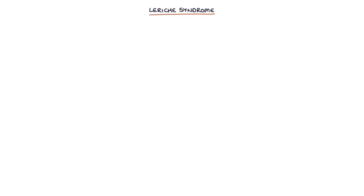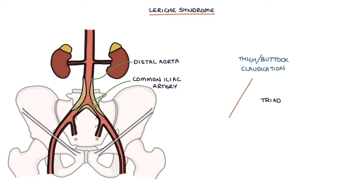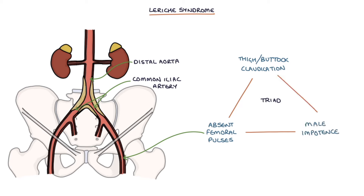Next let's talk about a very specific syndrome called Leriche syndrome. Leriche syndrome occurs with occlusion in the distal aorta or proximal common iliac artery, and there is a triad of thigh or buttock claudication, absent femoral pulses, and male impotence. So if you see this triad in your exams, think of Leriche syndrome.